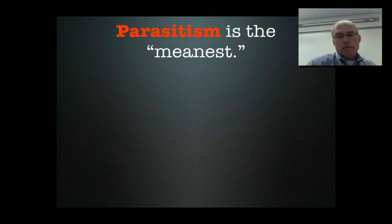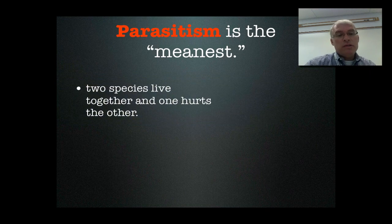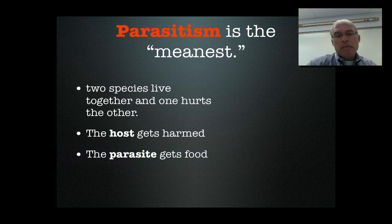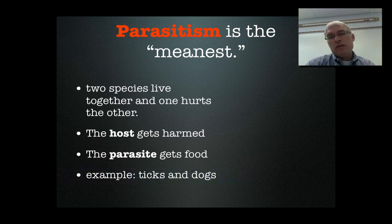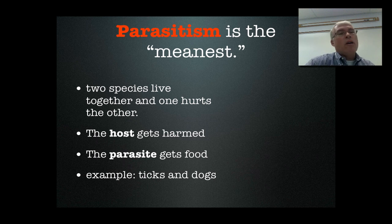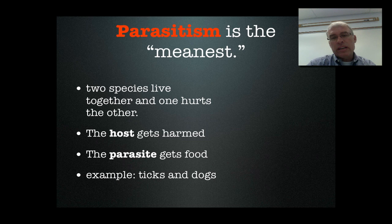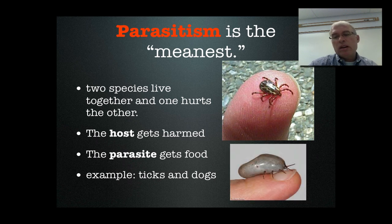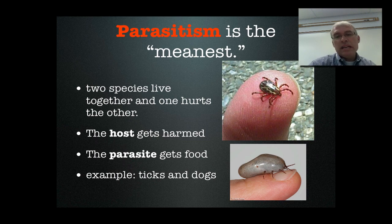An example of parasitism, the meanest kind of interaction, is when two species live together and one is hurt. The host is the individual being harmed, and the parasite is the species getting food or harming the host. An example would be ticks and dogs. You could also talk about fleas, lice, and different mites that might live in or on mammals. Here's a picture of a dog tick or deer tick, very small, and once it gets a full meal of blood, they swell up really big, especially the females. This parasitic organism gets its energy from a host species, and the host would be better off without the parasite.